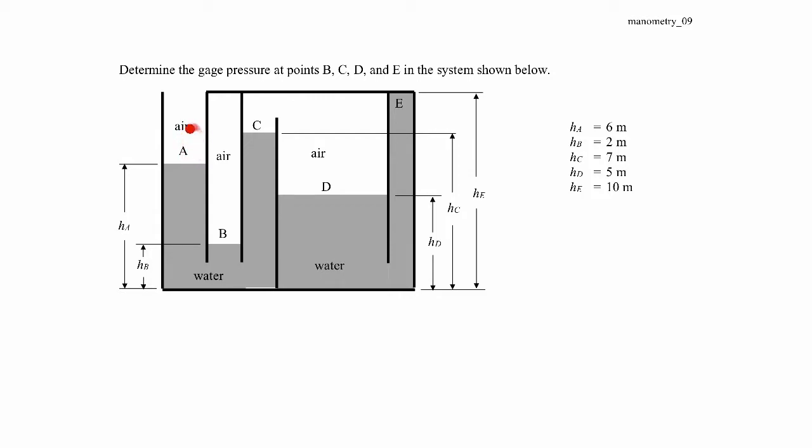First of all, the gauge pressure at point A would just be atmospheric pressure because it's open to the atmosphere. So pressure at A would just be zero gauge.